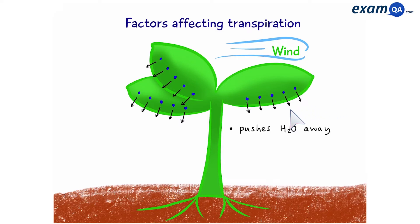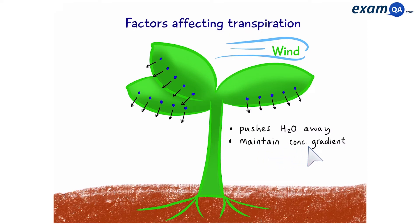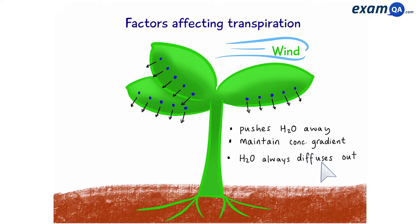So wind pushes away water molecules, which helps to maintain a concentration gradient. As a result, water always diffuses out, and this increases the rate of transpiration. The more windy it is, the more transpiration will occur.